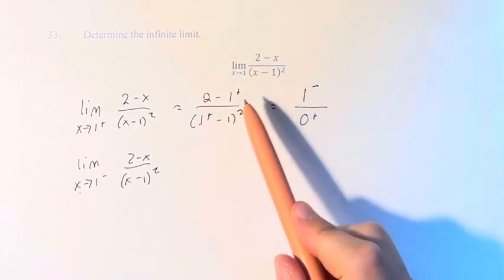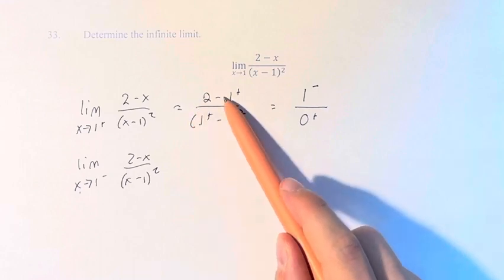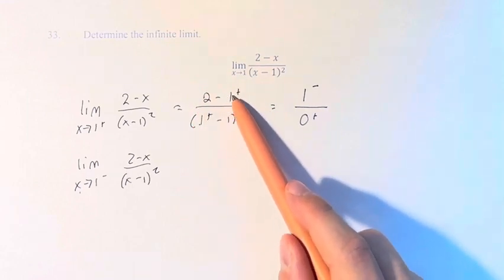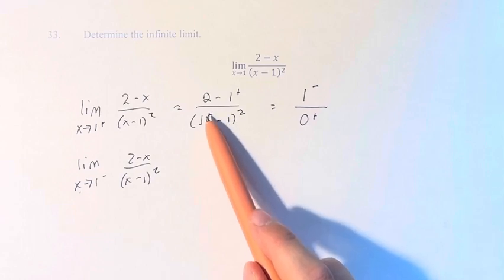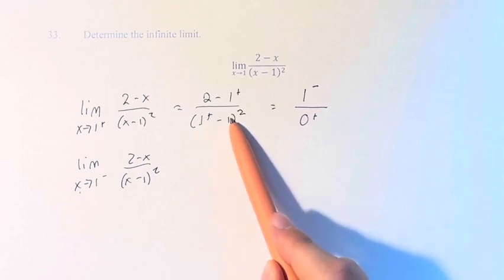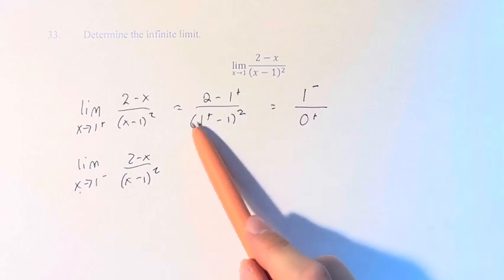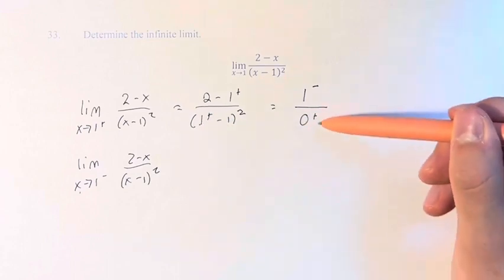And you can basically see the difference here. If we are subtracting something that's approaching a value, the sign flips. If we are taking that value and subtracting it or adding another number onto this, it stays the same.